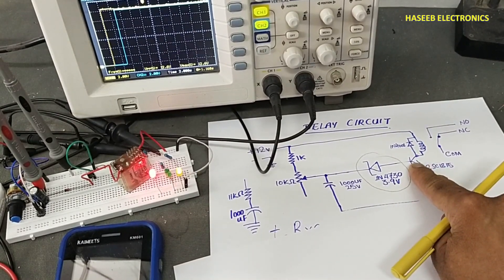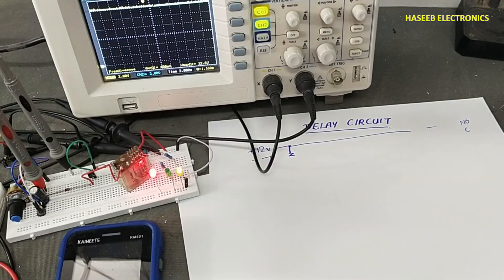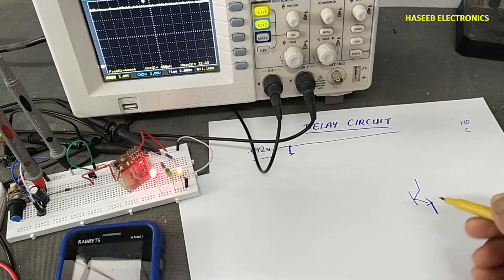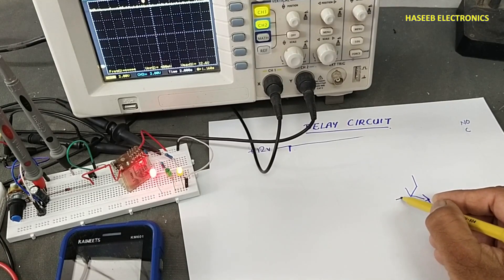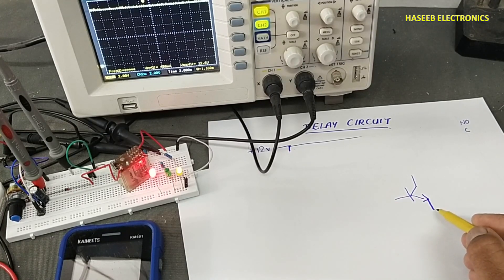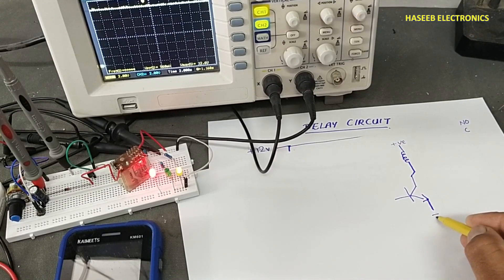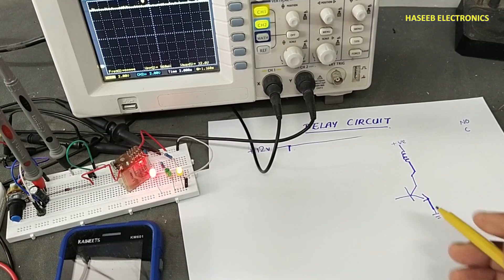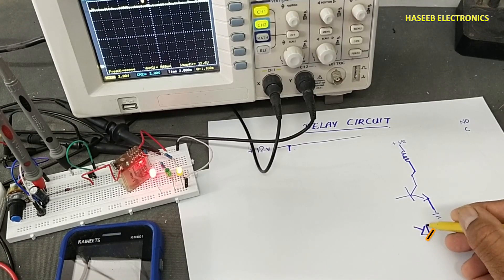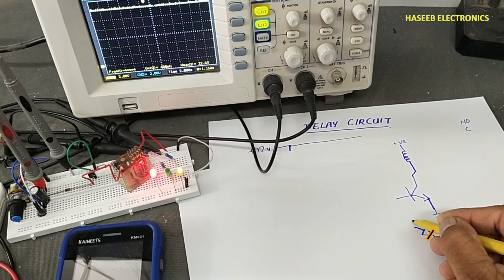We have one transistor here, a zener diode, a capacitor, and a resistor. When we say transistor — a transistor controls current in two ways. We produce base current from base to emitter. The second current flows from collector to emitter to drive the load. It is an NPN transistor. The equivalent circuit is here — that diode represents the base-emitter junction. This is the emitter and this is the base.